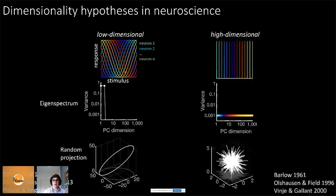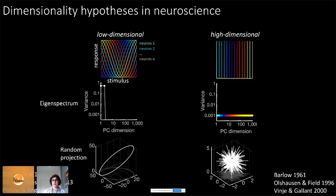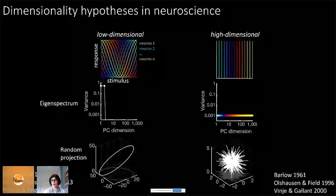A high-dimensional sparse code has every neuron coding for a different stimulus — each neuron is a spike for a different stimulus — giving a flat variance spectrum where every eigenvector is a different neuron. A random projection gives something like a spiky ball: move any small amount in stimulus space and the representation completely changes, as a totally different neuron encodes your stimulus. This system has precision but isn't robust to noise.